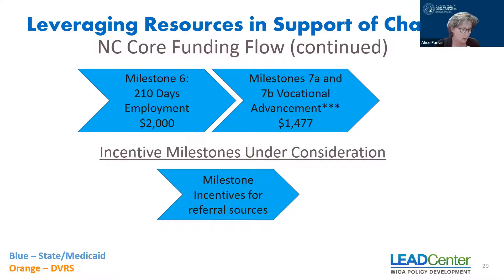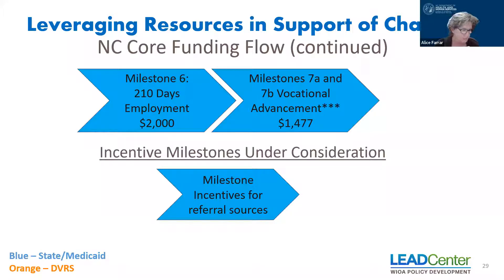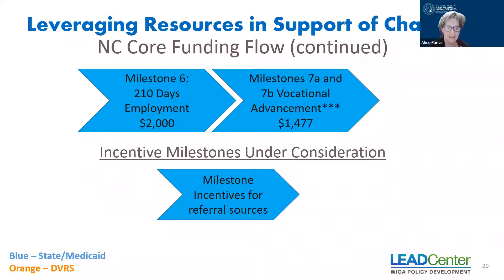Job supports are initiated sequentially after an individual obtains employment, and since it can take a couple of jobs to find the right fit, this milestone can also be paid multiple times. Once independence is achieved at work, VR begins the 90-day count, and upon achieving that, there is a 90-day successful employment payment. Funding doesn't end there — there's an additional milestone of 210 days employment funded by state or Medicaid dollars, and finally a milestone for vocational advancement, which includes pursuing further education for career advancement or assisting an individual with a promotion. Each milestone has specific documentation required for approval.